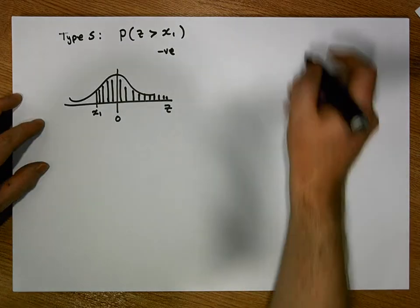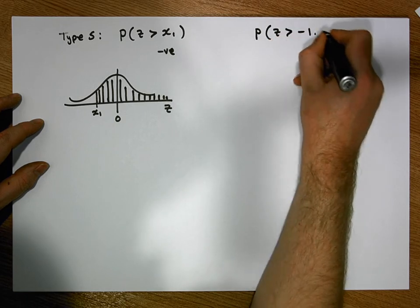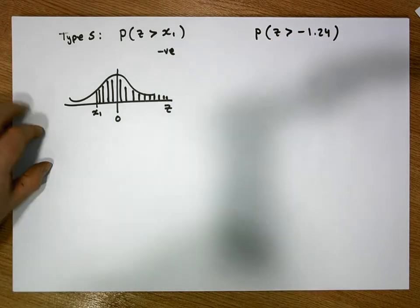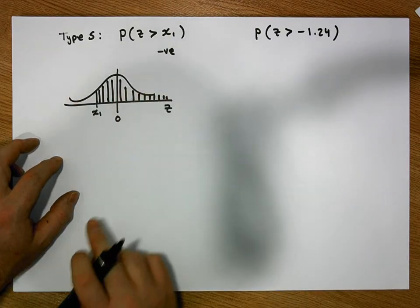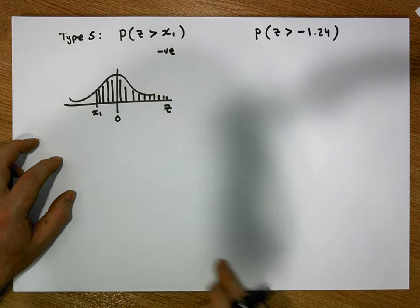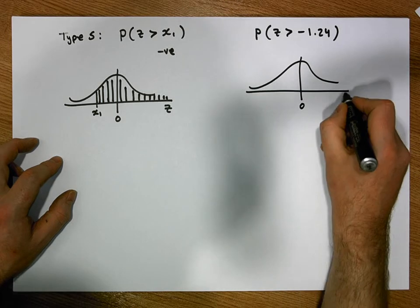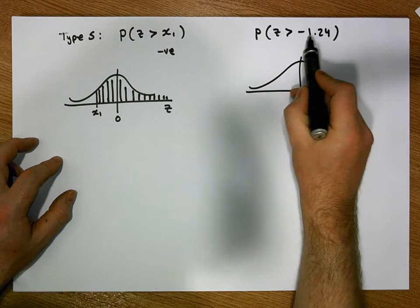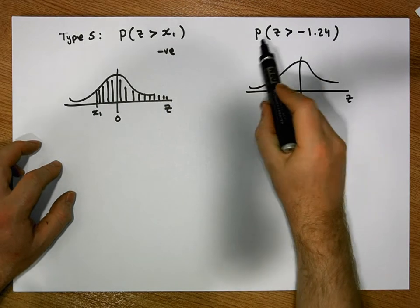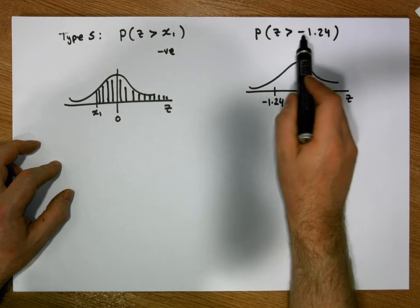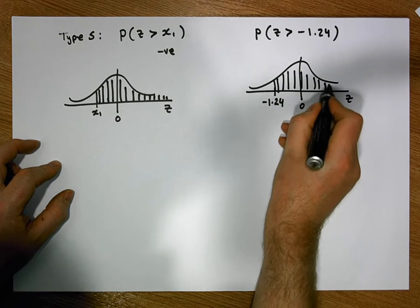Let's look at a particular example. Say we want to calculate the probability of observing a z-score greater than minus 1.24. The first thing we always do is draw the standard normal distribution and place our bounds on that curve. It's centered on 0, the horizontal axis represents the z-axis, and minus 1.24 is over here on the left. We're interested in the area to the right-hand side of minus 1.24.